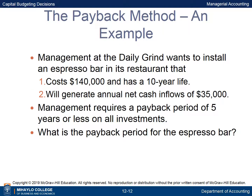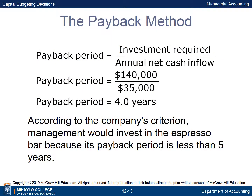Management of the Daily Grind wants to install an espresso bar that costs $140,000, has a 10-year life, and will generate annual net cash inflows of $35,000. Management requires a payback period of 5 years or less. The payback period is $140,000 divided by $35,000, which equals 4 years. Management would invest in the espresso bar because its payback period is less than 5 years.